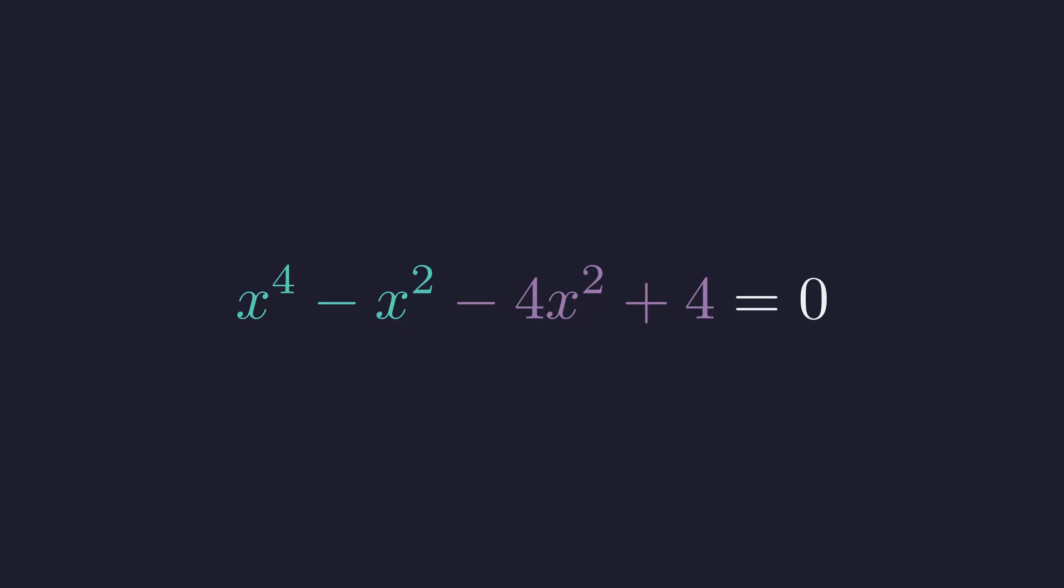We'll factor a common term from the first two terms and another from the last two. From the first pair, we factor out x squared. From the second, we factor out negative 4. And just like that, a common binomial factor appears: x squared minus 1. Factoring that out, we're left with x squared minus 4 times x squared minus 1 equals 0.